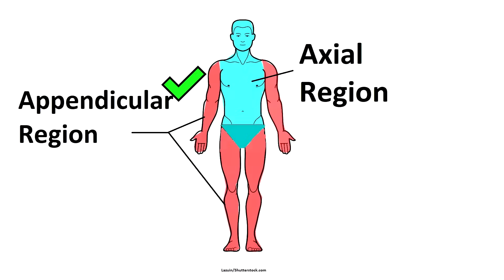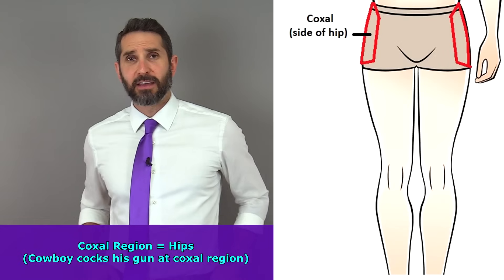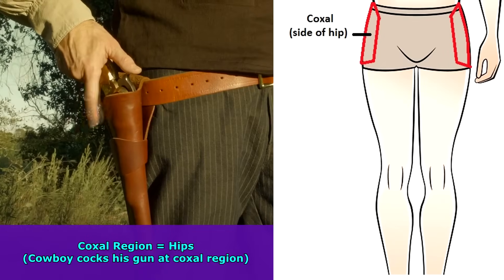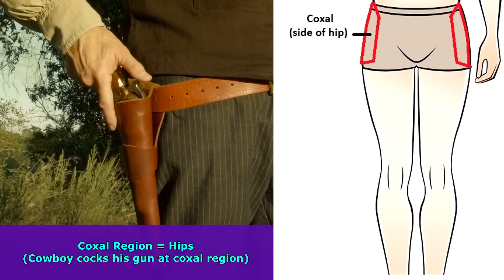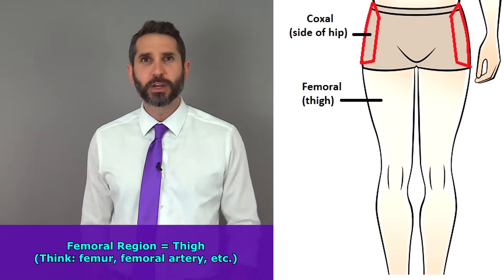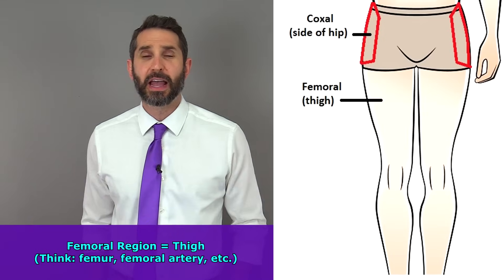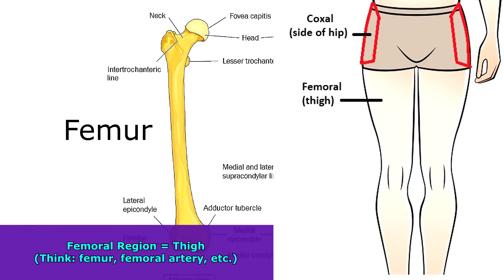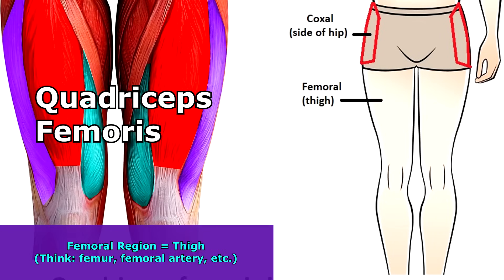Now let's talk about the lower limbs, starting with the coxal region. I like to think of a cowboy grabbing his gun and cocking it at the coxal region. The femoral region is the whole region of your thigh, where you have the femur bone, the femoral artery running down, and muscles called the quadriceps femoris. Do you see how the dots are being connected in anatomy?